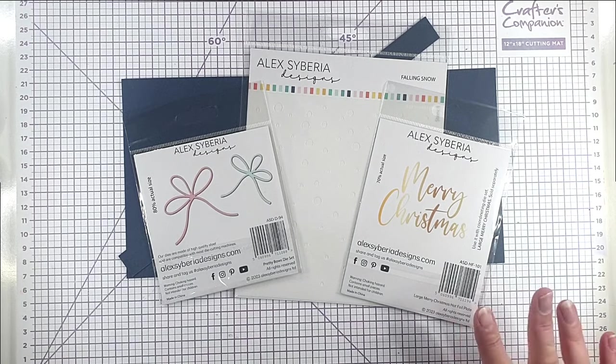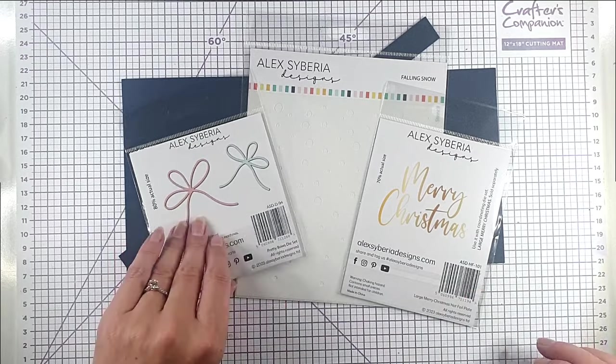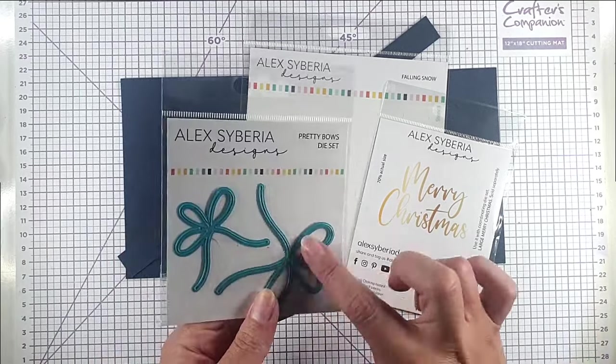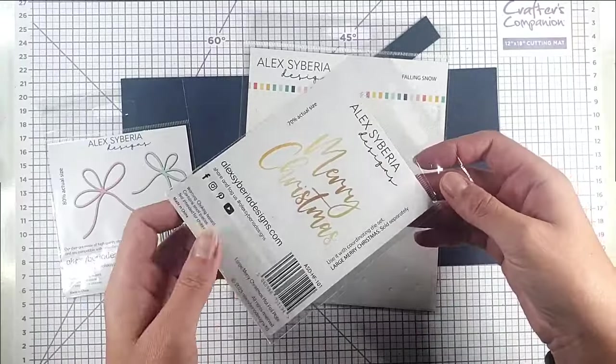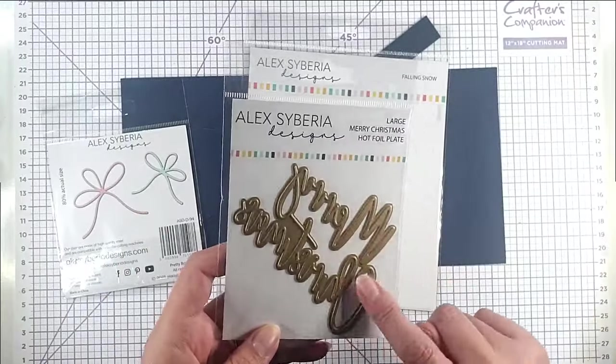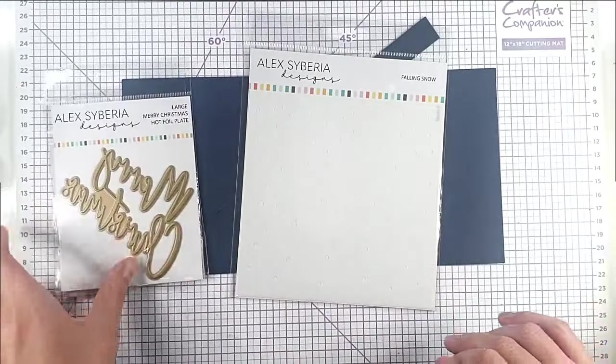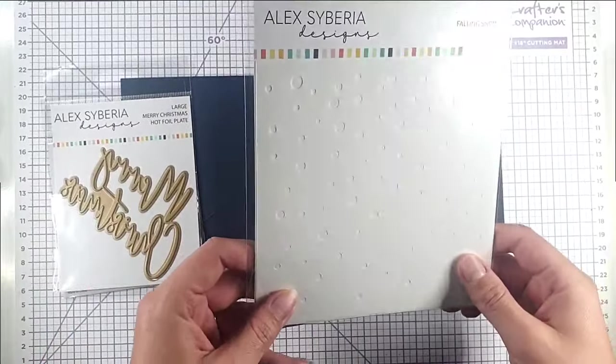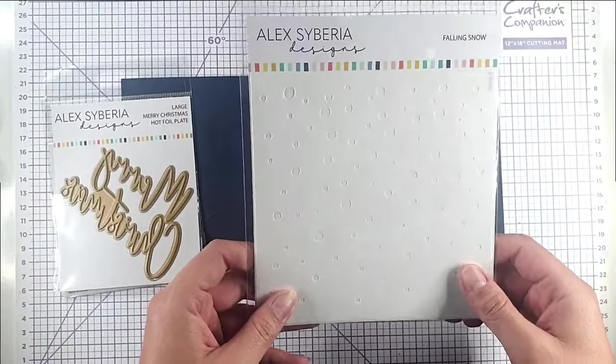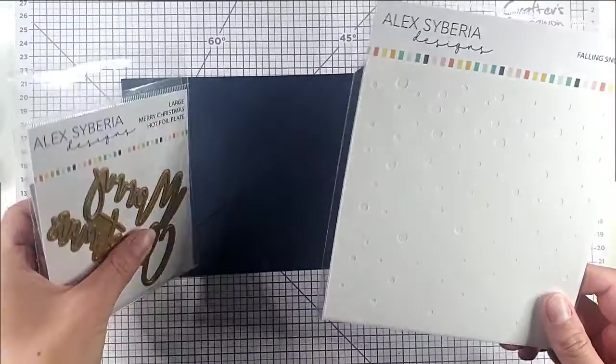I'm going to be using these really cute products I bought from Alex Siberia Designs. I've got this Pretty Rose die set, large Merry Christmas hot foil plate and you can get a die set to go with this separately as well, and I've got this Falling Snow stencil as well.